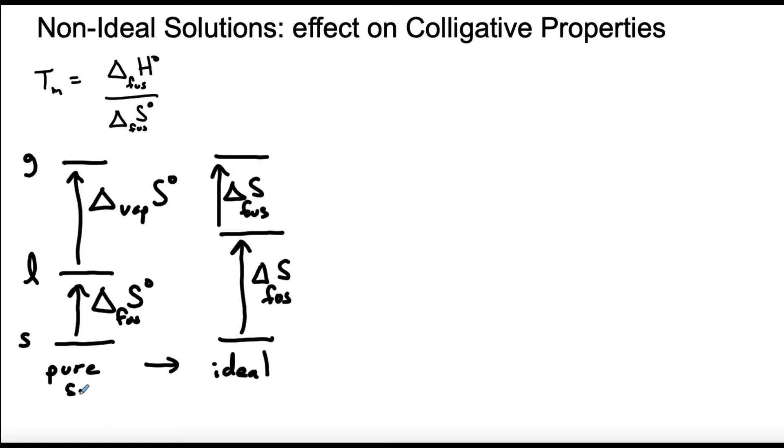So now we've got our entropy of fusion for our solution rather than for our pure solvent. So as we go from pure solvent to an ideal solution we can see what happened. We change the entropy change that you get, so the delta S of the phase transition. So we've increased the entropy change of melting. So when we go from solid to liquid because the solid is pure but the solution is not, the amount of entropy we get when we go from solid to liquid has gone up because we're going from a pure to an impure phase. We're melting into the solution from a pure frozen solvent.